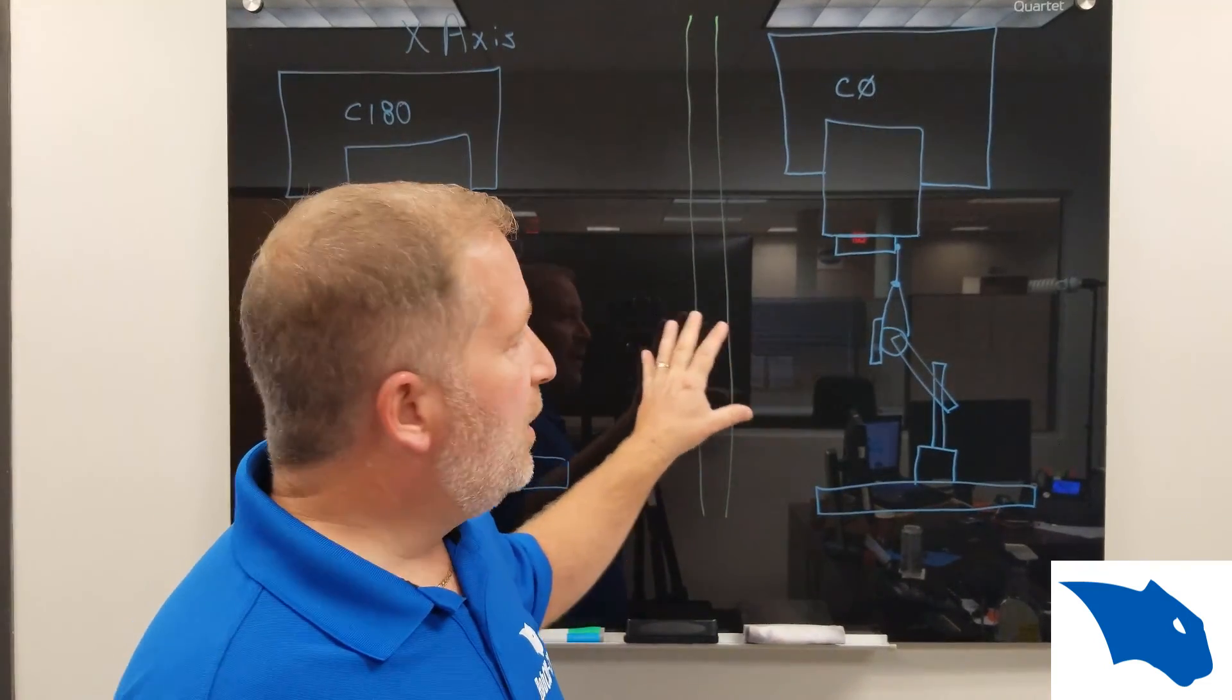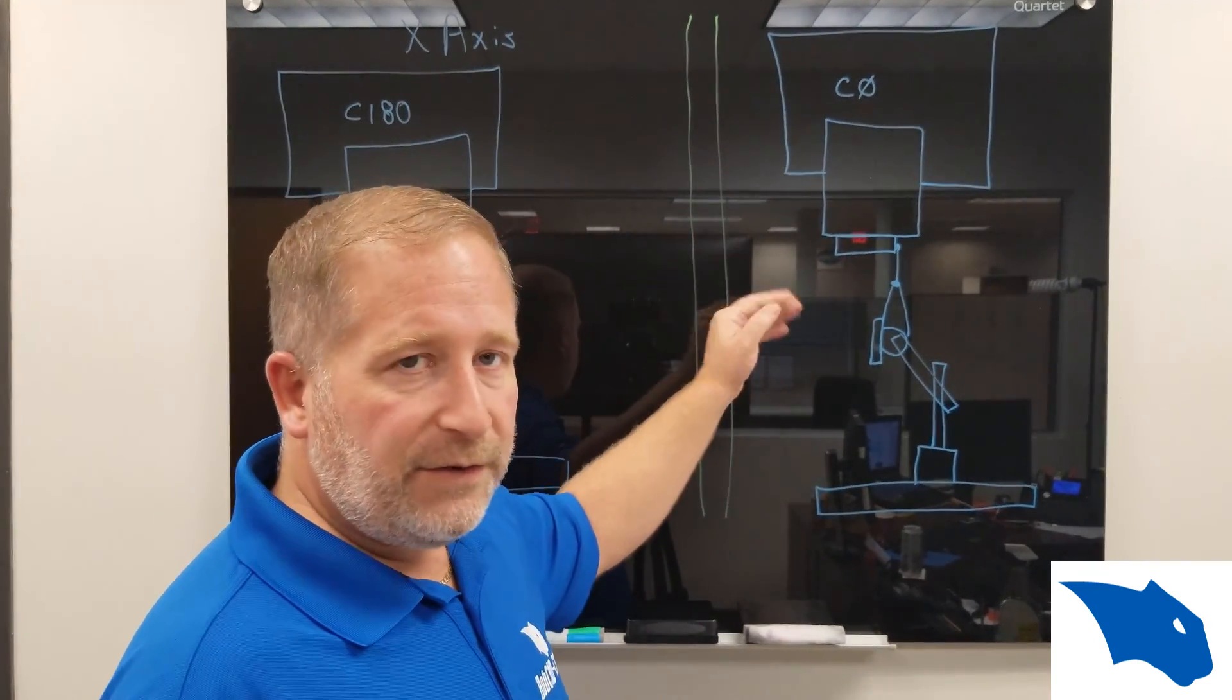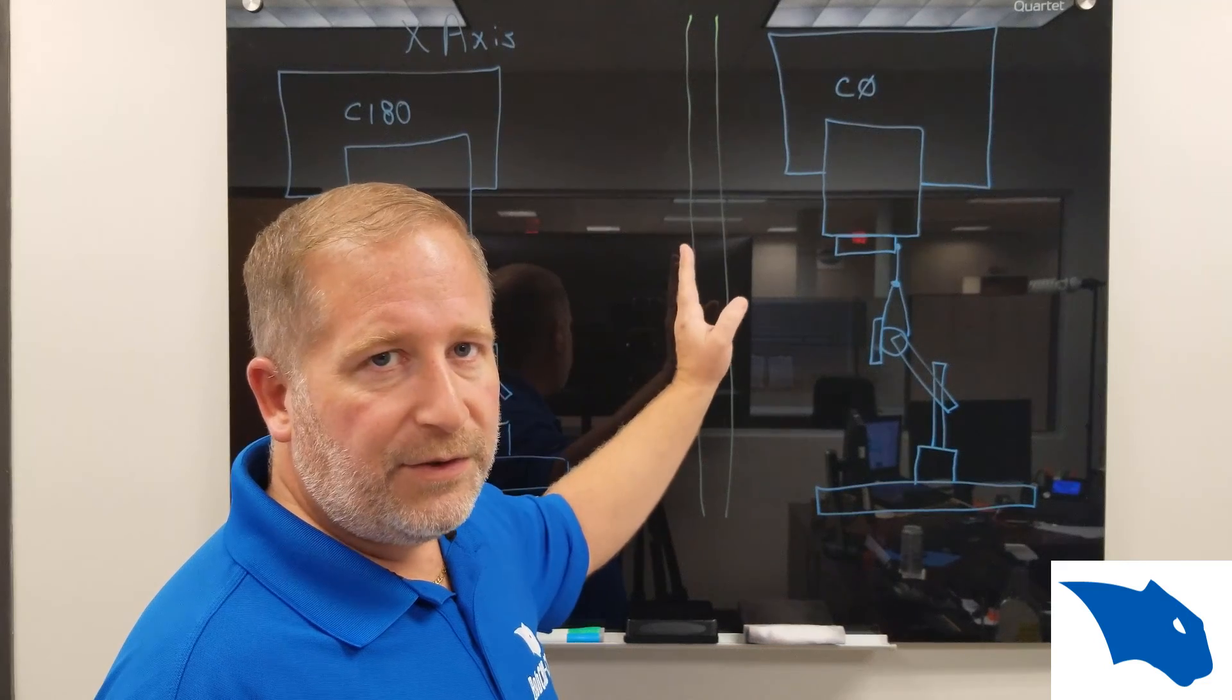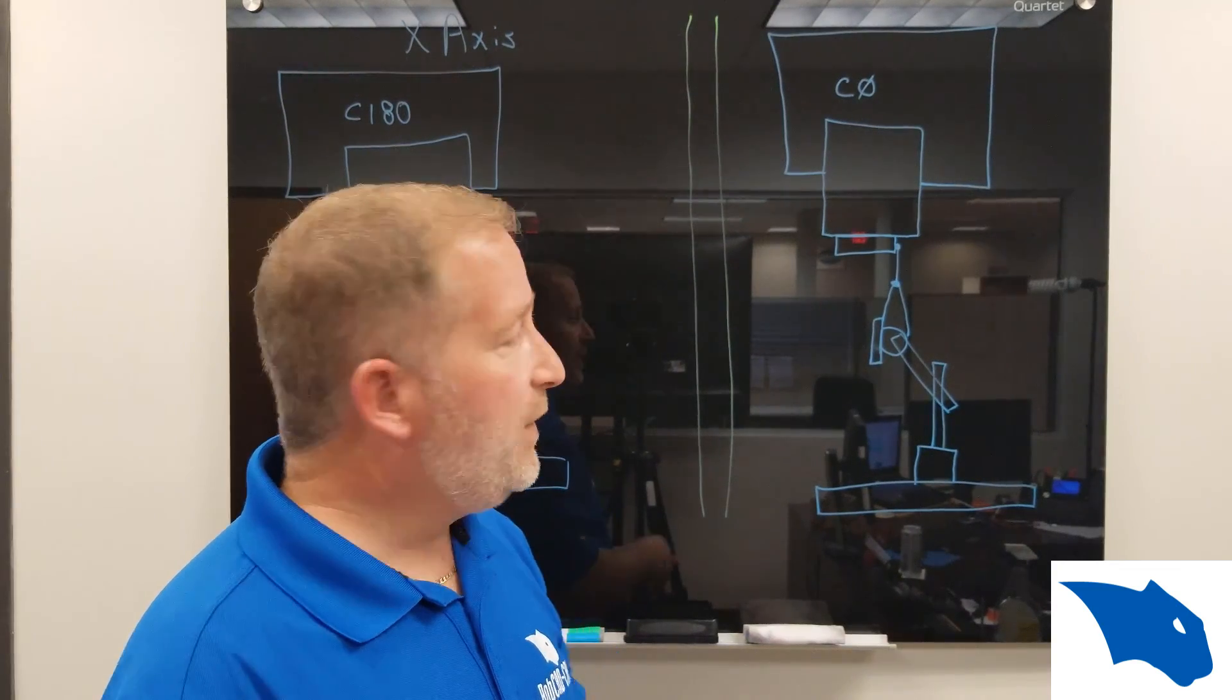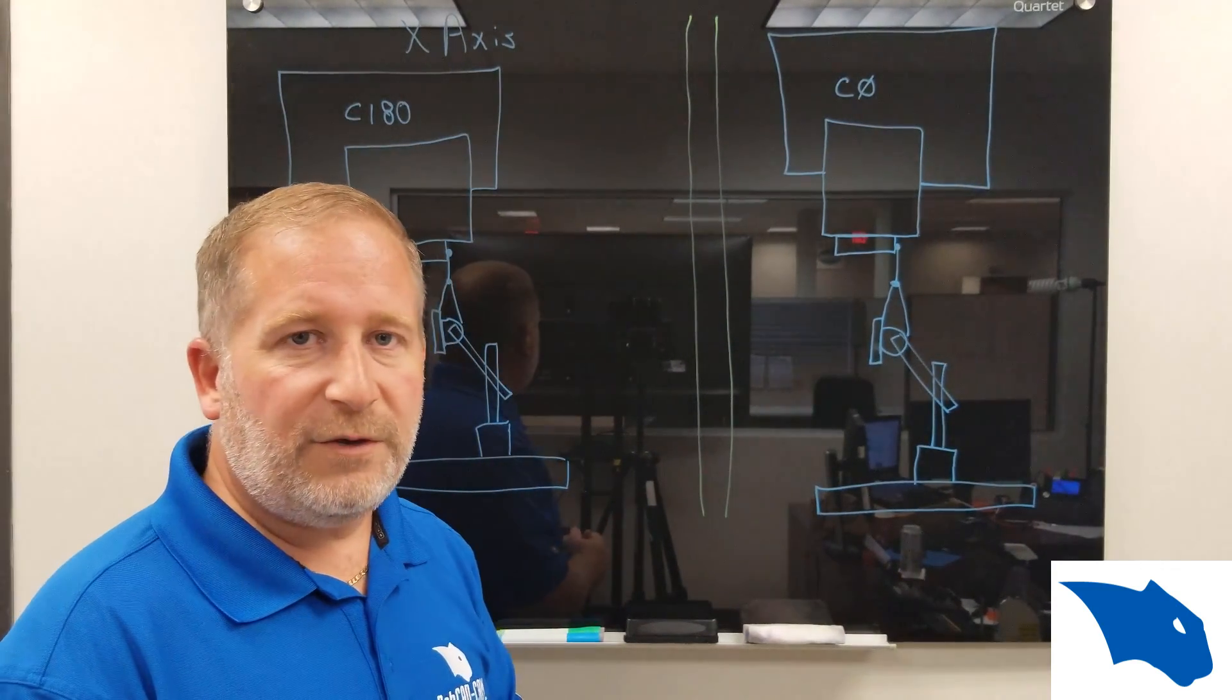Once you have those numbers, you can actually find any shift in y or x to the center of rotation and you also know your z height from the previous example that we did on the board. I hope this helps!